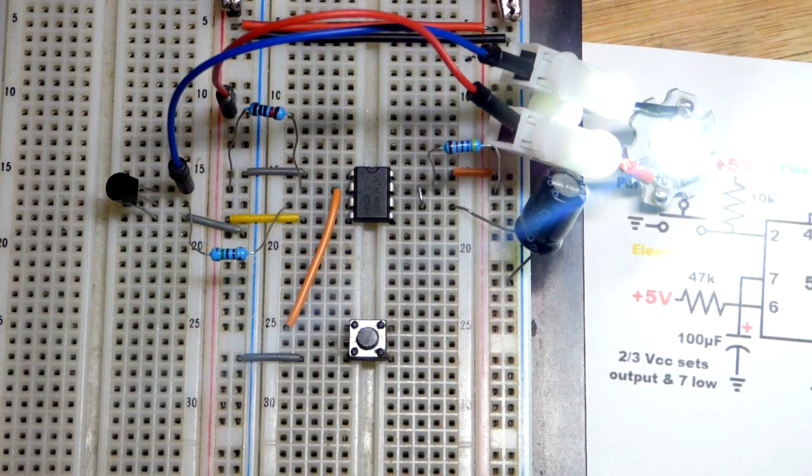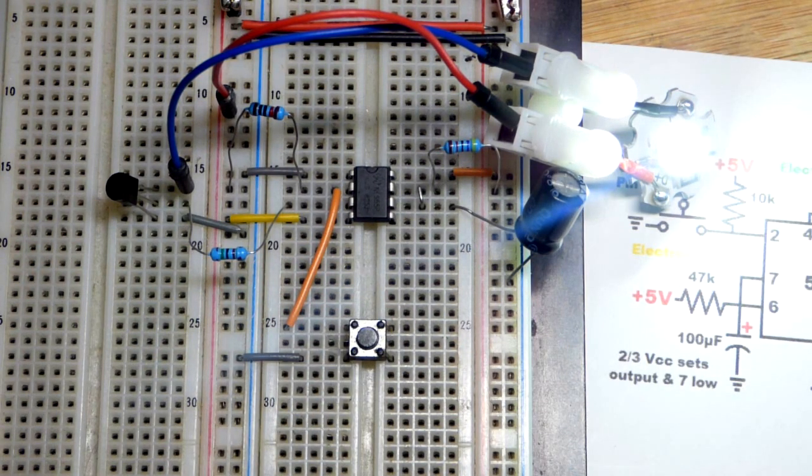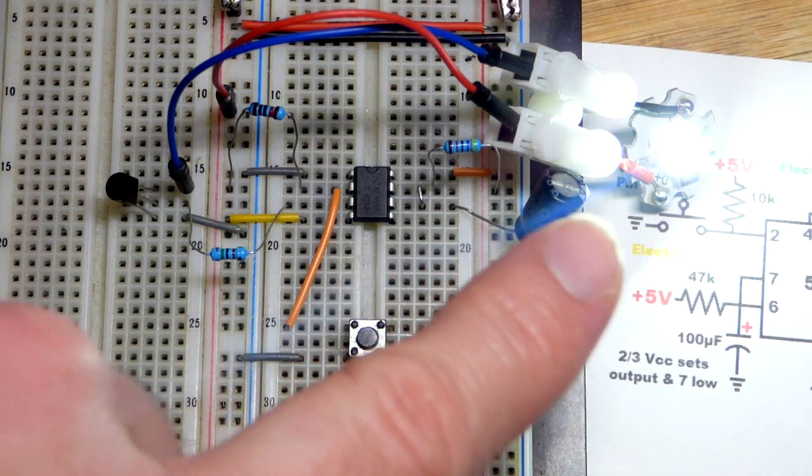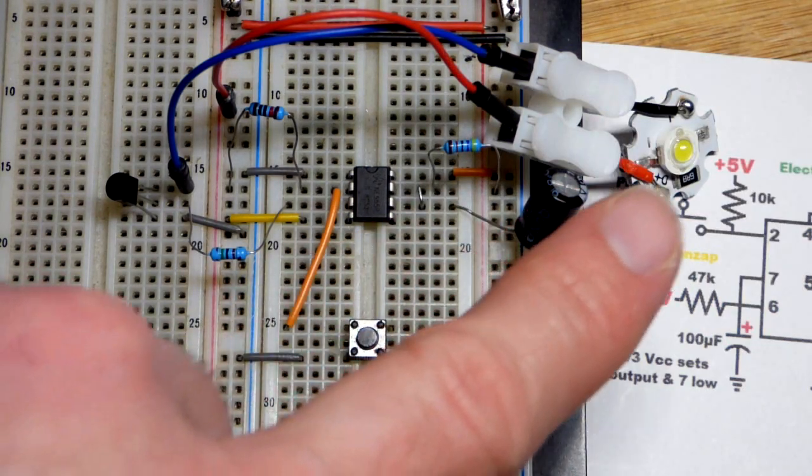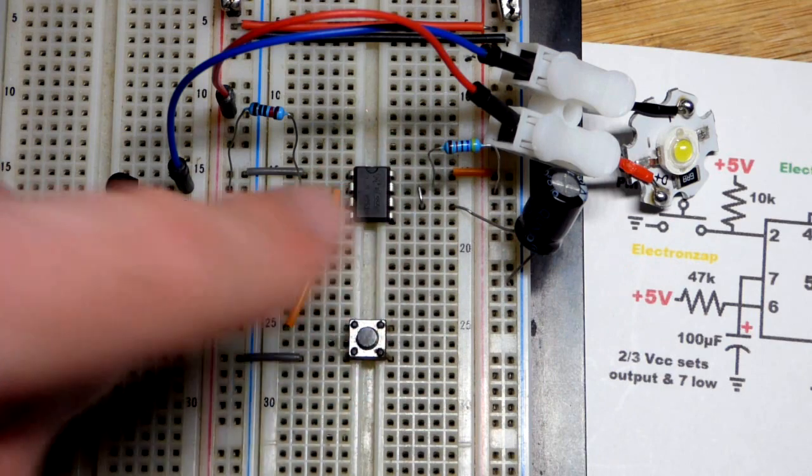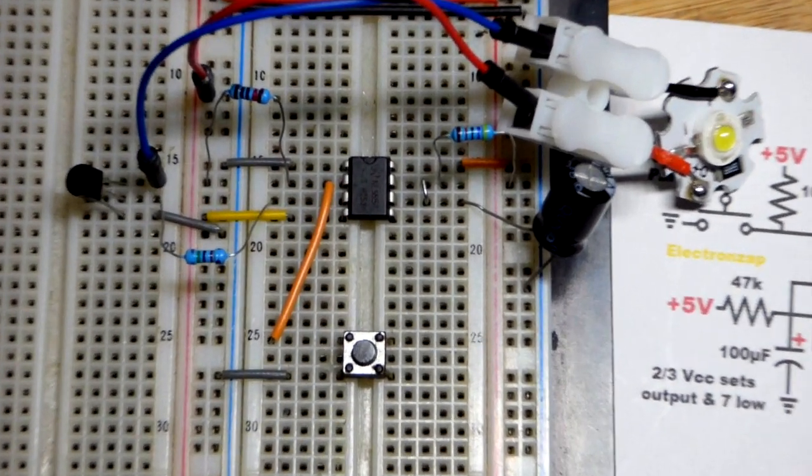And to end the video we'll take a closer look at the circuit here. So I meant to say about 5 seconds. Looks like it's a little shorter than that. The LED is on when we press the button. I said 5 volts.